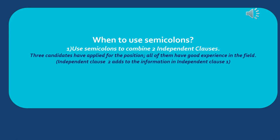The first use of a semicolon is to combine two independent clauses. You remember that we combine two independent clauses using a comma with one of the FANBOYS, and this is another way to combine two independent clauses when there is a relationship between them — the second independent clause adds to the information given in the first. When we put a semicolon in between them, we do not capitalize the first letter in the second independent clause. Look at the sentence: 'Three candidates have applied for the position; all of them have good experience in the field.' Notice the word 'all' at the beginning of the second independent clause is not capitalized.